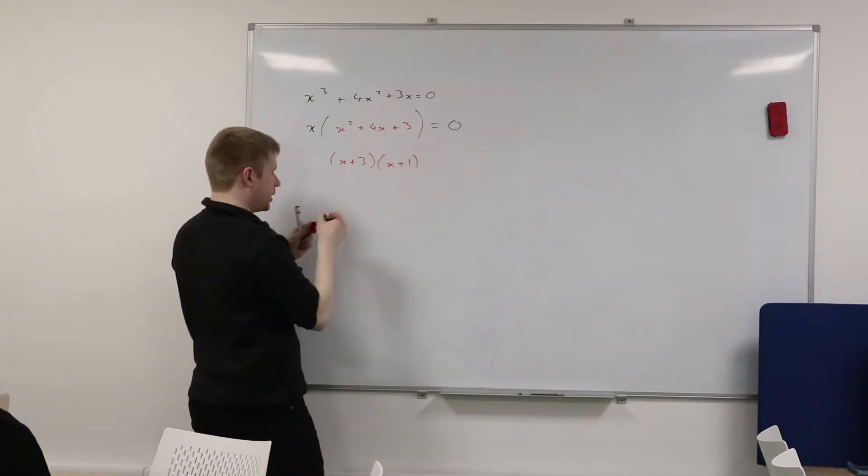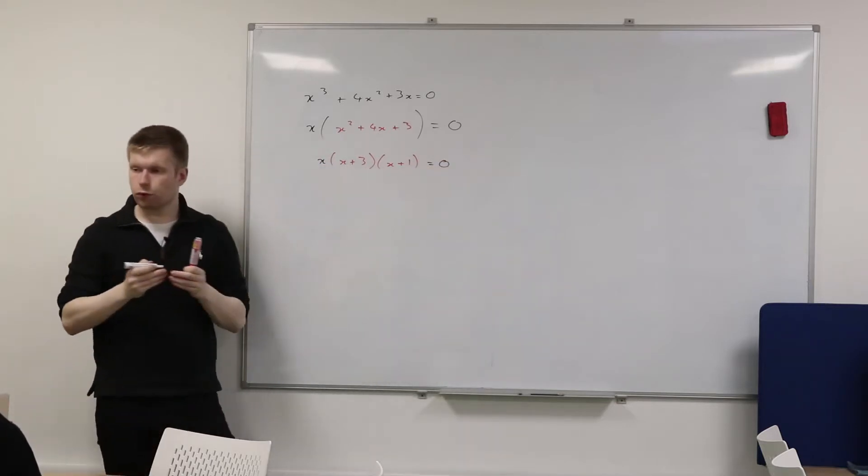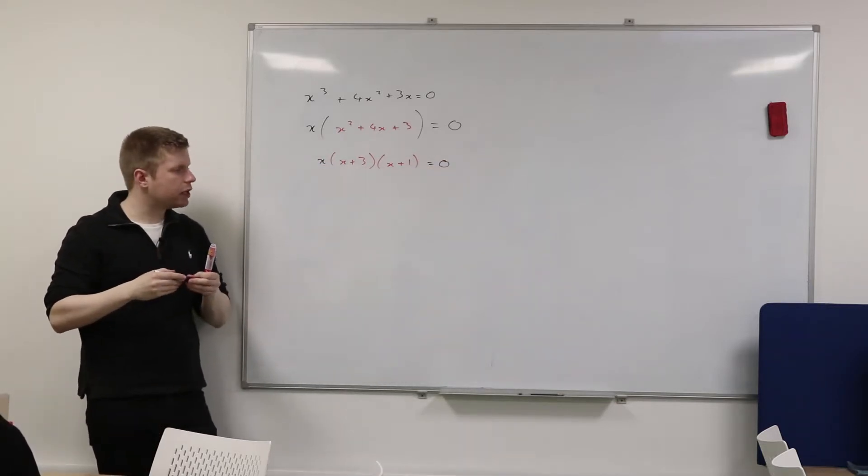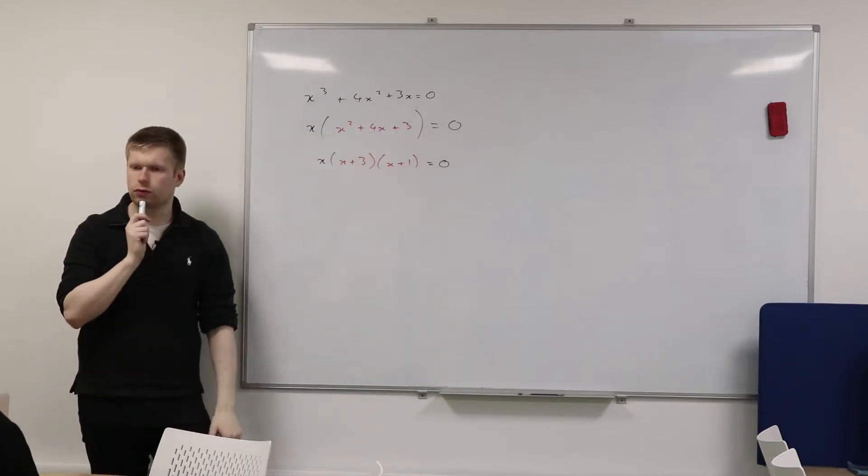And of course, you're going to get x times all of this. Okay? Right, now how do I finish this off? I clearly haven't finished it, because the question was solve, find the value of x. How could I finish this off?